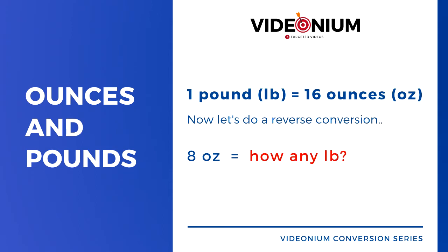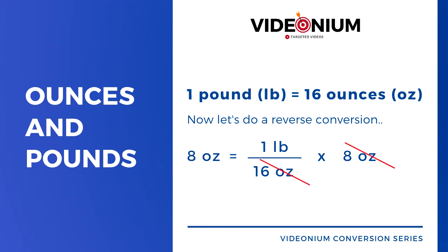So how about a reverse conversion from ounce to pound? One pound is the same as 16 ounces, so we perform this operation to find out how many pounds correspond to 8 ounces. So then, 8 ounces contain half a pound, as shown above.